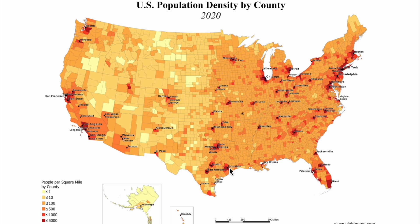Going further into the South, a lot of areas fall in the 100–500 people per square mile range, with densely populated spots like Atlanta, Memphis, and Nashville. Florida has the Tampa, Orlando, Jacksonville, and Miami areas. New Orleans is also very densely populated. West Virginia doesn't have anything over about 500 people per square mile — that's just how it is here.